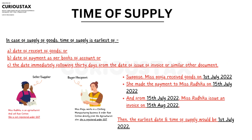Now, the main question is the time of supply — this is a very important concept. We need to determine in which month the recipient will pay the GST return under reverse charge. For goods, there are three criteria, and whichever date falls earliest will determine the month in which GST is paid.